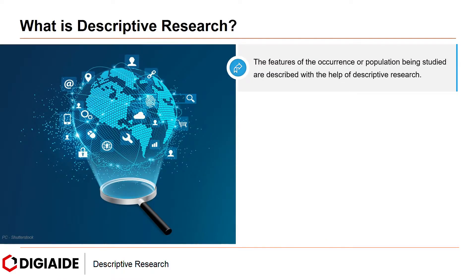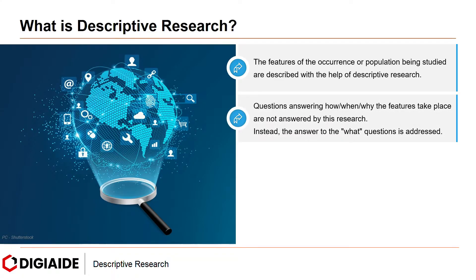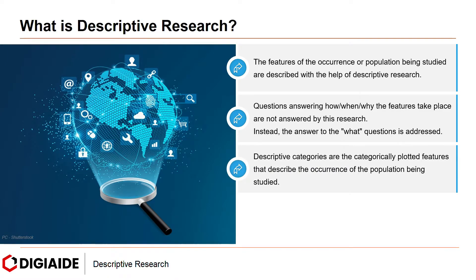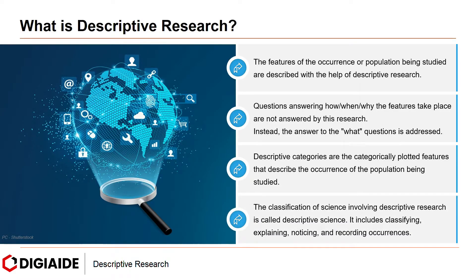The features of the occurrence or population being studied are described with the help of descriptive research. Questions answering how, why, and when the features take place are not answered by this research. Instead, the answer to the what questions is addressed. Descriptive categories are the categorically plotted features that describe the occurrence of the population being studied. The classification of science involving descriptive research is called descriptive science. It includes classifying, explaining, noticing and recording occurrences.